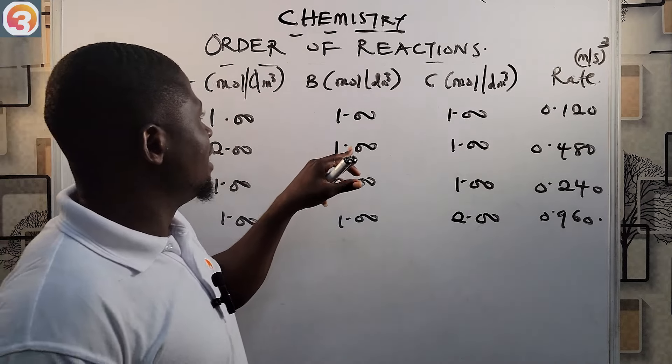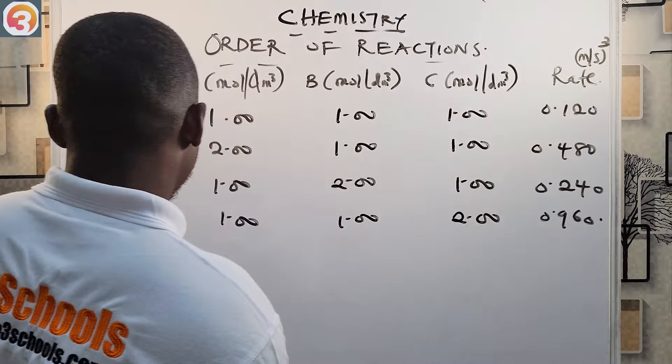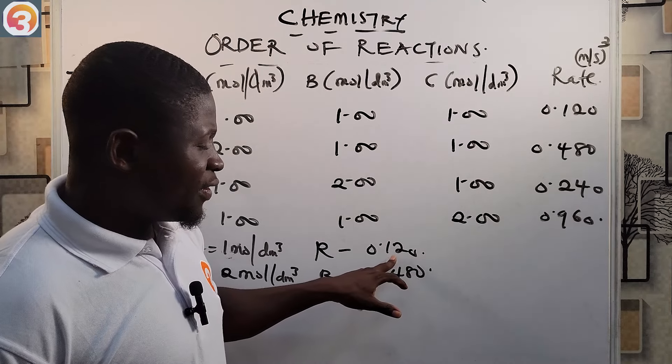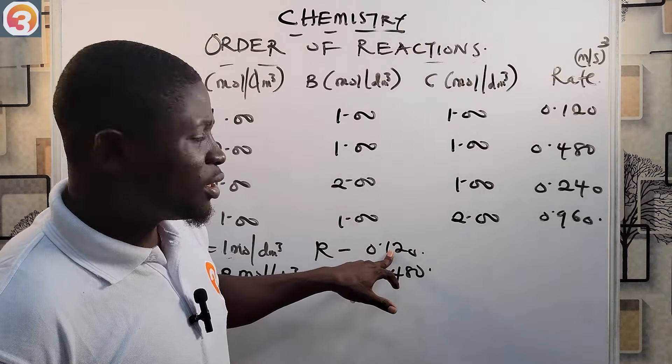Welcome back. We now have a table showing reactants A, B, and C combining to form product D. The table gives concentrations in mol/dm³ at particular times and the corresponding rates at those times. Let's start with A: when the concentration of A was 1.00 mol/dm³ at time t₁, the rate was 0.120.